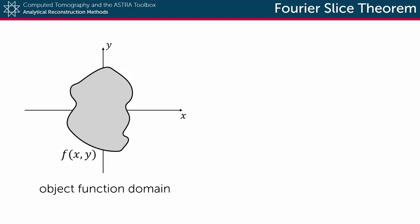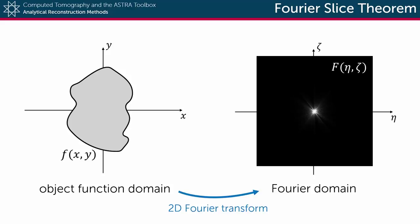So we have a two-dimensional object function f represented on a Cartesian domain. To represent this function on the Fourier domain, you can simply apply a two-dimensional Fourier transform on it.